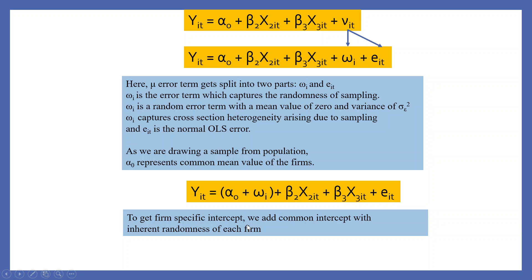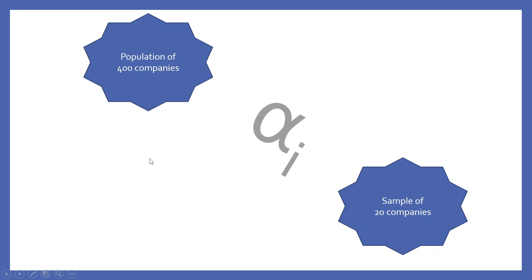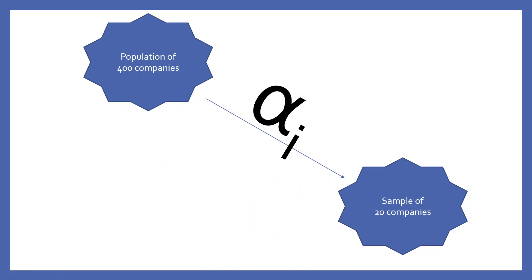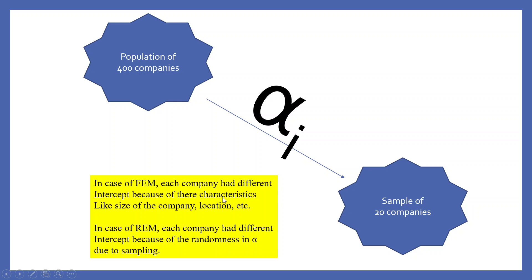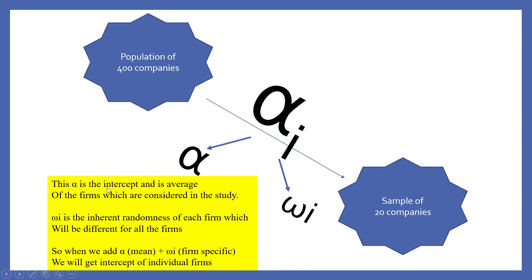To get the firm-specific intercept, we add the common intercept with the inherent randomness of each firm. For example, with a population of 400 companies, we extract a sample of 20 companies and get intercept alpha_i. In FEM, each company has a different intercept because of its characteristics like size and location. In REM, each company has a different intercept because of the randomness in alpha due to sampling. We split alpha_i into alpha (the mean intercept of all firms) plus omega_i (the firm-specific randomness).